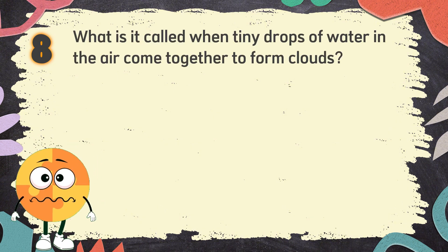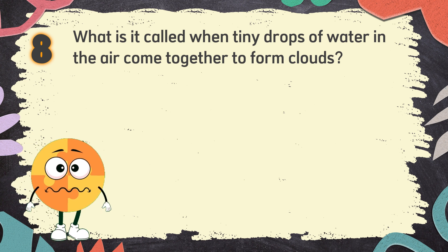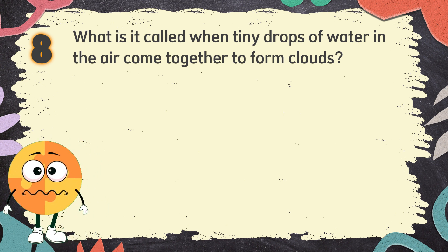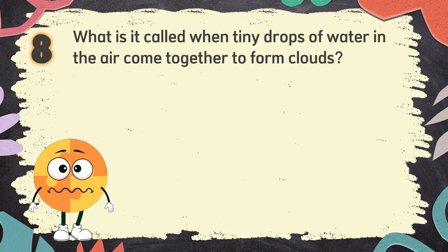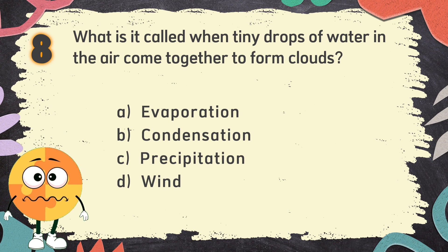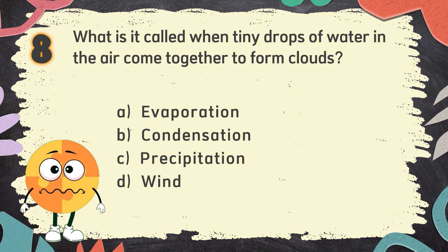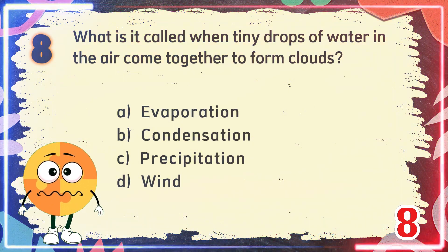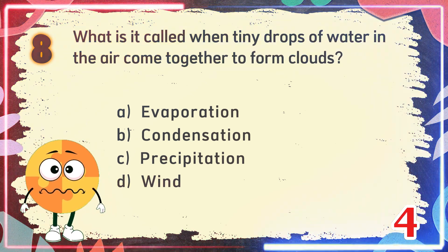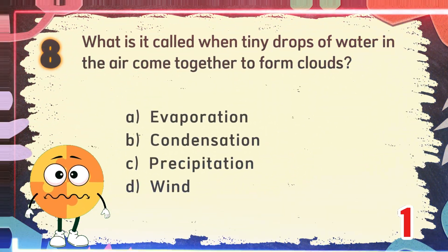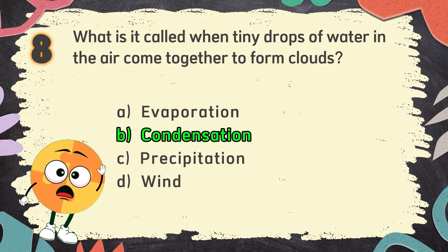Number 8: What is it called when tiny drops of water in the air come together to form clouds? The choices are: A. Evaporation, B. Condensation, C. Precipitation, D. Wind. The correct answer is B. Condensation.